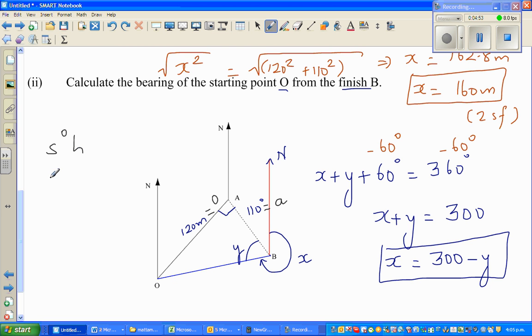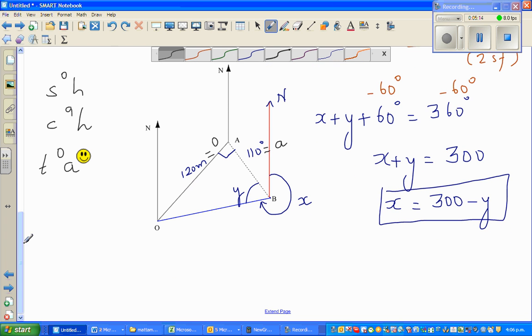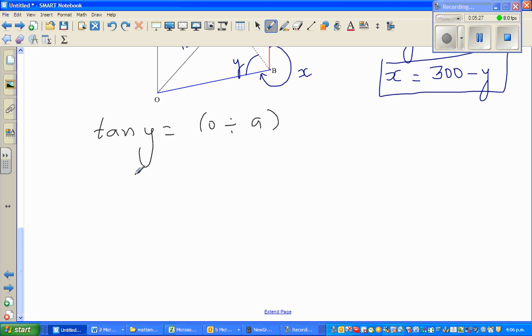So for sine is opposite over hypotenuse, cos is adjacent over hypotenuse, and TOA. So you've got O and A and you want to use which ratio? This is TOA, so this will become tan y is equal to O divided by A. So taking tan inverse of both sides, y is tan inverse of O divided by A.